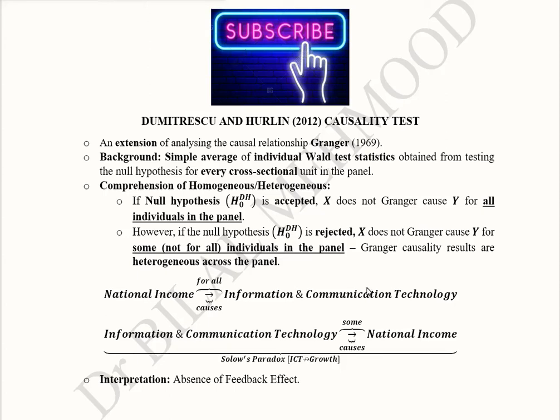This video is about an econometric test known as the Dumitrescu-Hurlin causality test. It is an augmentation of the Granger causality test, which was presented in 1969.